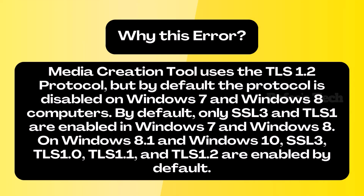Now let me explain why this error occurs. The media creation tool uses the TLS 1.2 protocol, but by default this protocol is disabled on Windows 7 and Windows 8 computers. By default, only SSL 3 and TLS 1 are enabled on Windows 7 and 8. On Windows 8.1 and Windows 10, SSL 3, TLS 1, TLS 1.1, and TLS 1.2 are all enabled by default.